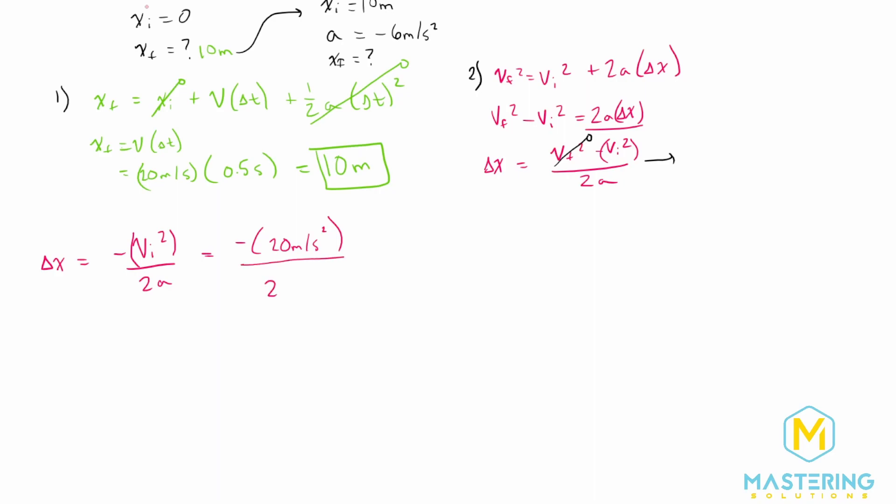We'll divide all of that by 2 times the acceleration, which we said is a negative 6 meters per second squared. So now it makes more sense why we have to have the negative on the top, because we'll have a negative for this value. 2 times this negative 6 will also give us a negative value for the bottom. So the whole distance will be a positive distance, because she's going in the positive x direction.